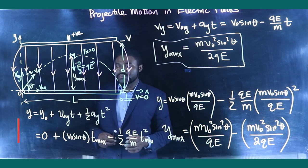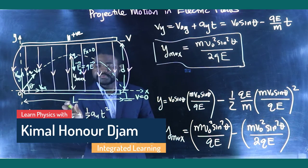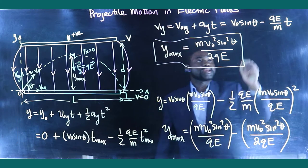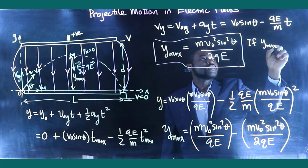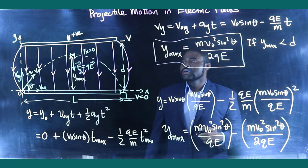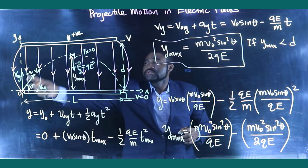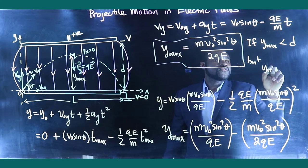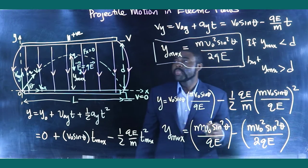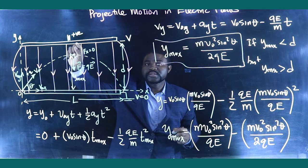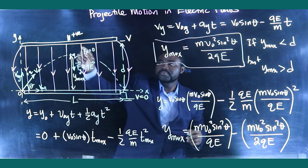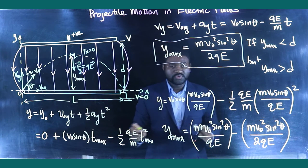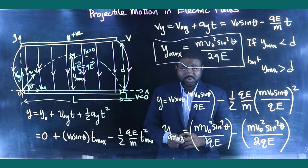The next thing we need to calculate is the horizontal range L. Note that if Y max is less than D, the charged particle never hits the top plate. But if Y max is greater than D, the charged particle actually collides with the top plate, and the motion changes. To analyze the motion after collision, we would employ the law of conservation of momentum as well as the law of conservation of energy.